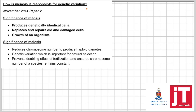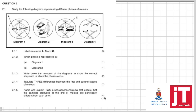The significance of mitosis: it produces genetically identical cells, replaces and repairs old and damaged cells, and allows for growth of an organism. The significance of meiosis: it reduces the chromosome number to produce haploid gametes, genetic variation is important for natural selection, and it prevents the doubling effect of fertilization, ensuring the chromosome number of a species remains constant.